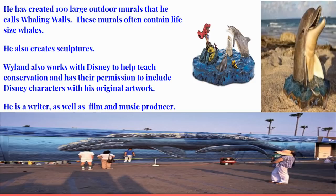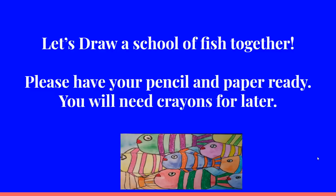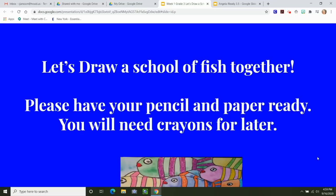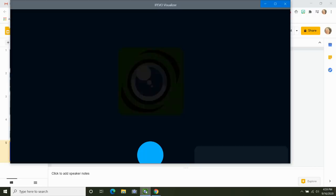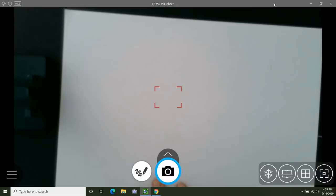Now it's time for us to draw our school of fish together. You'll need your imagination, a piece of paper, and a pencil. You'll also need crayons for later. You will see my screen change so that we can draw together. In art, we have what we call paper styles, and that defines the direction that our art is in. If our paper is turned horizontally across, it's called landscape style, and that's the direction we're going to work in today. So turn your paper landscape style.